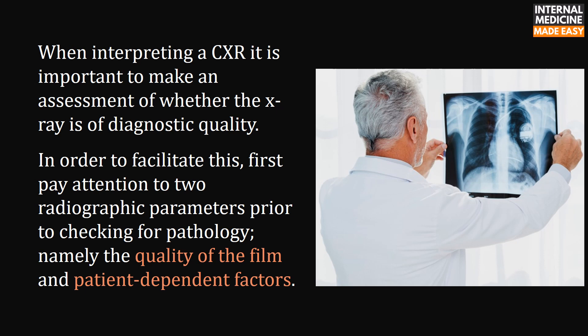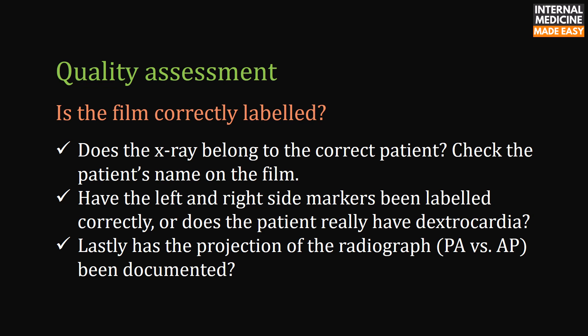When interpreting a chest x-ray, it is important to assess whether the x-ray is of diagnostic quality. Pay attention to two radiographic parameters prior to checking for pathology: the quality of the film and patient-dependent factors. Quality assessment includes: is the film correctly labelled — does the x-ray belong to the correct patient? Check the patient's name. Have left and right side markers been labelled correctly, or does the patient really have dextrocardia? Has the projection (PA versus AP) been documented?